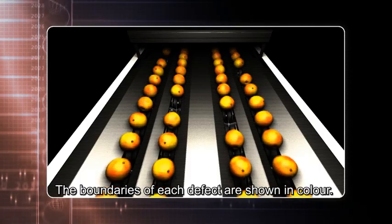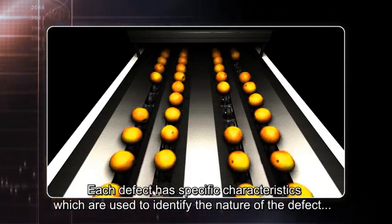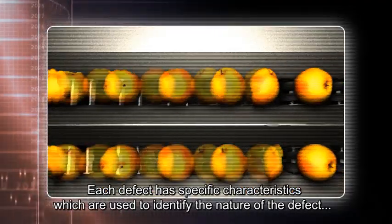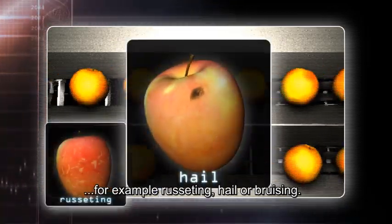The boundaries of each defect are shown in color. Each defect has specific characteristics which are used to identify the nature of the defect, for example, russeting, hail, or bruising.